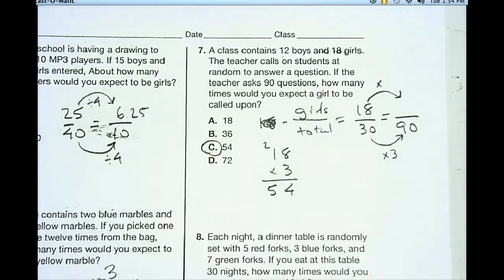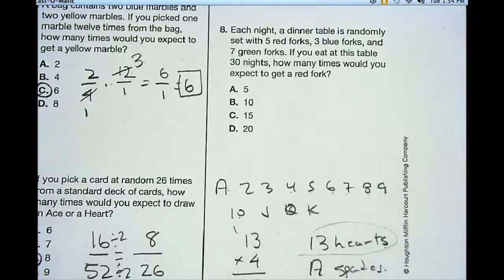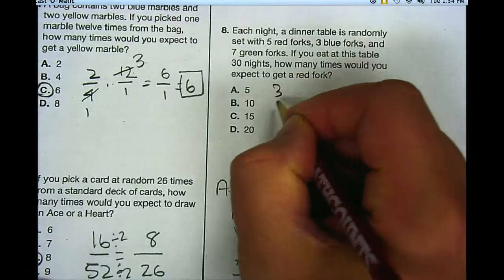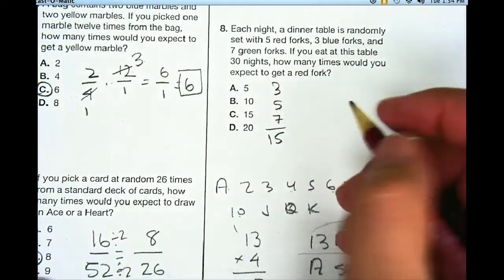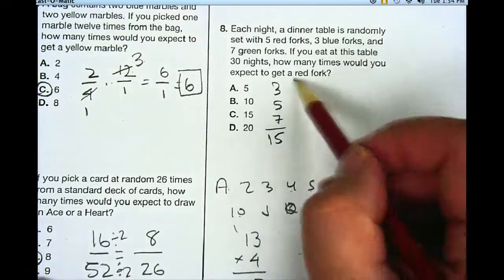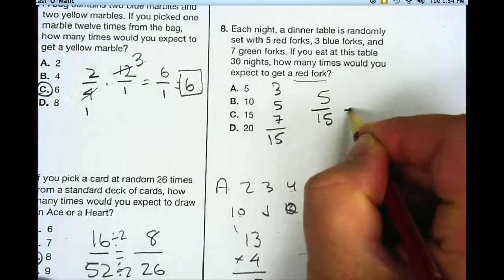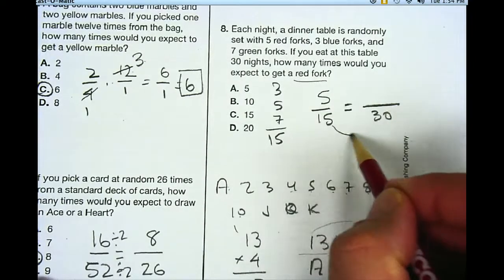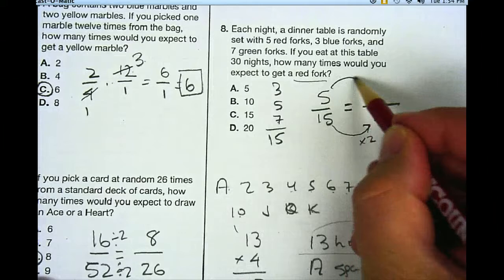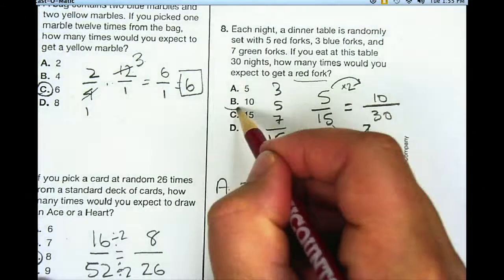And I only have one more problem left to do. So let's see what this one looks like. Each night, a dinner table is randomly set with 5 red forks, 3 blue forks, and 7 green forks. If you eat at this table 30 nights, how many times would you expect a red fork? So if I add up all my forks, I have 3 plus 5 plus 7. If I add those up, I get 15 different forks I could get. So how many are red out of those 15? 5 are red out of a total of 15. Now if I do this 30 times, how many times would I expect to get a red fork? Well, it works out really neatly also in this one. I can just multiply 15 times 2, and 5 times 2, and I'll get 10 for that answer.